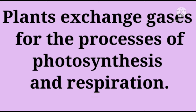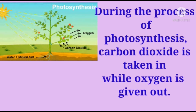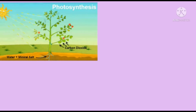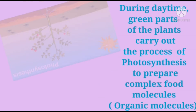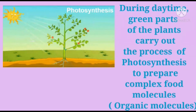During the process of photosynthesis, carbon dioxide is taken in while oxygen is given out. During daytime, green parts of the plants carry out the process of photosynthesis to prepare complex food molecules that are organic molecules.